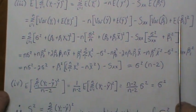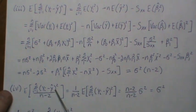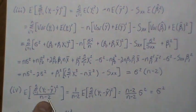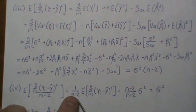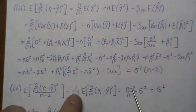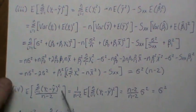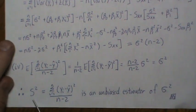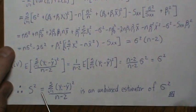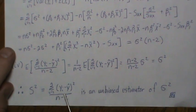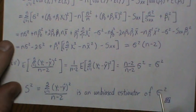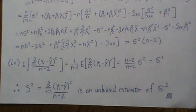In Step 4, we conclude: if we take the expected value of the sum of squared residuals divided by n minus 2, the constant (n minus 2) comes out front, and we have (n minus 2)*sigma squared divided by (n minus 2), which equals sigma squared. Therefore, s squared defined as the sum of (yi minus yi-hat) squared divided by n minus 2 is an unbiased estimator of sigma squared, the residual variance.